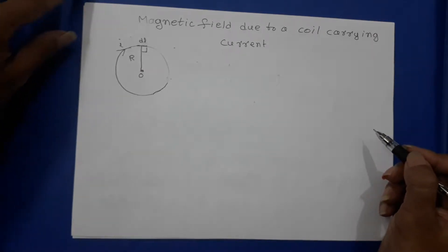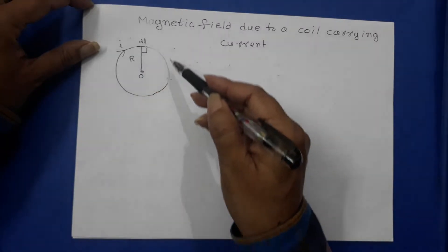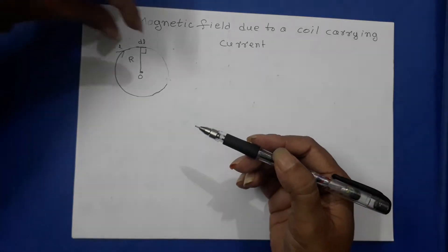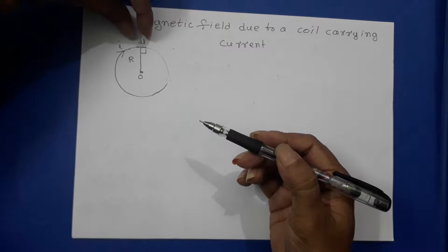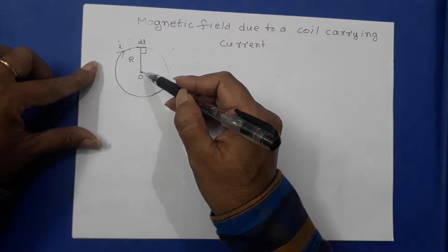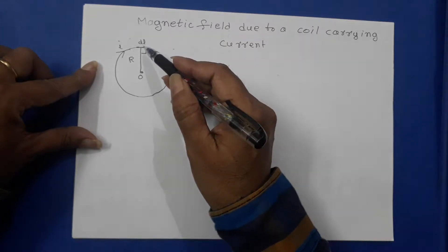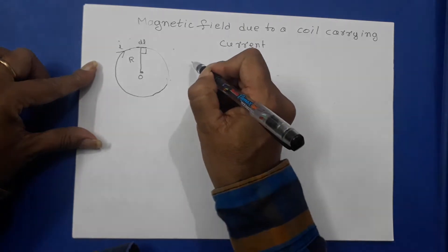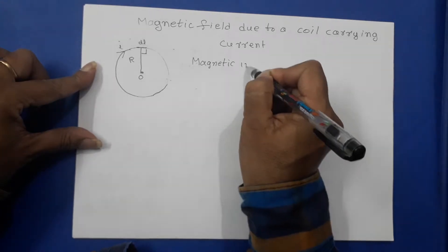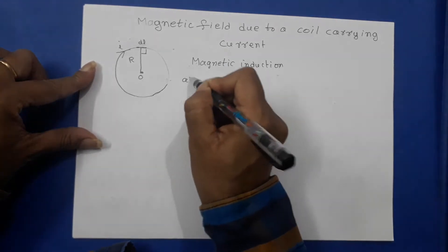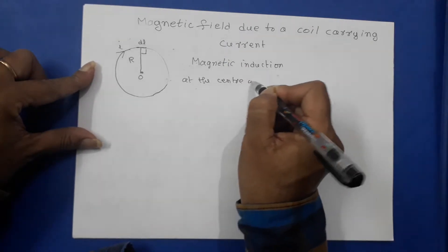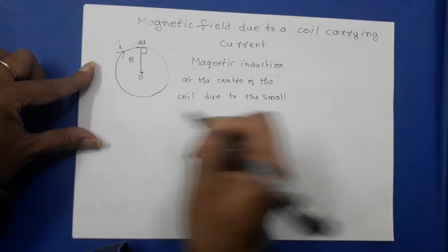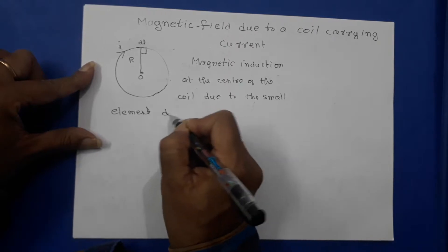For this I use the Biot-Savart law. Imagine the entire current-carrying loop is divided into a number of small elements. Consider one such element whose length is DL. I will first find the magnetic induction DB at the center due to this small element, and by integrating that, you can find the magnetic induction at the center due to the entire coil.